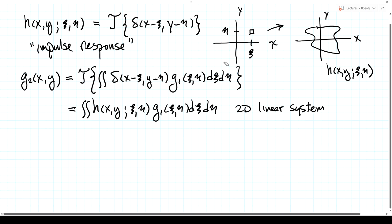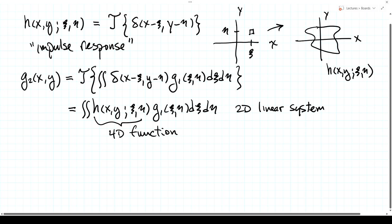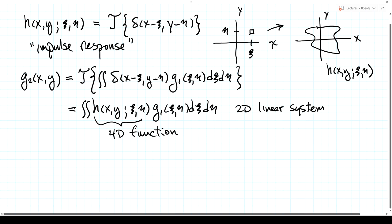This says: for each little pixel at input coordinates xi and eta, that pixel produces an output equal to g1(xi, eta) times the impulse response h(x, y, xi, eta). In general, the impulse response is four-dimensional — for every different pixel in the input, we could get a completely different output function. This is a difficult system to analyze, even though it is linear. Things are considerably simpler if we have the property of shift invariance.